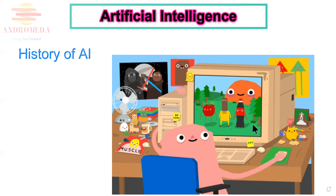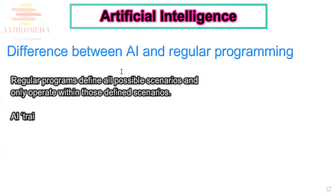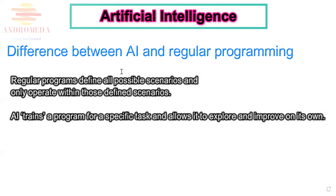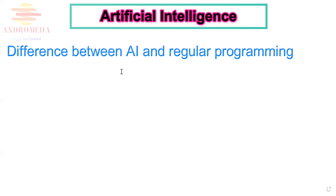What's the difference between AI and regular programming? Regular programs define all possible scenarios and only operate within those defined scenarios. AI trains a program for a specific task and allows it to explore and improve on its own. A good AI figures out what to do when met with unfamiliar situations.